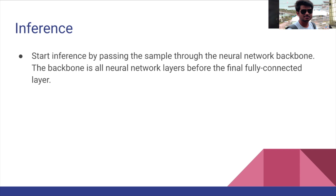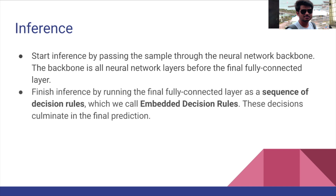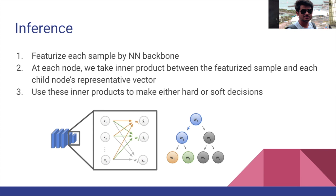Inference starts by passing the sample through the neural network backbone — that is, all neural network layers before the final fully connected layer. We finish inference by running the final fully connected layer as a sequence of decision rules, which we call embedded decision rules, culminating in the final prediction. At each node of the decision tree, we take the inner product between the feature vector from the backbone and each child node's representative vector.